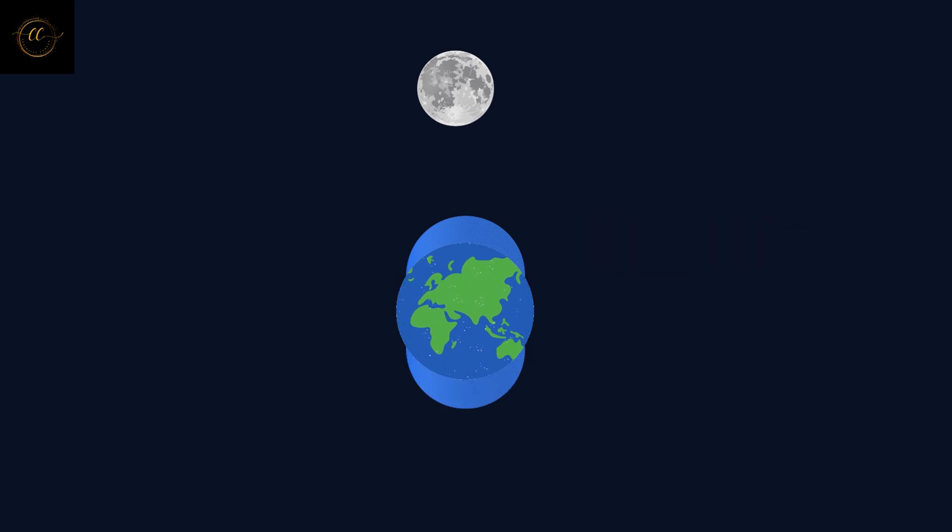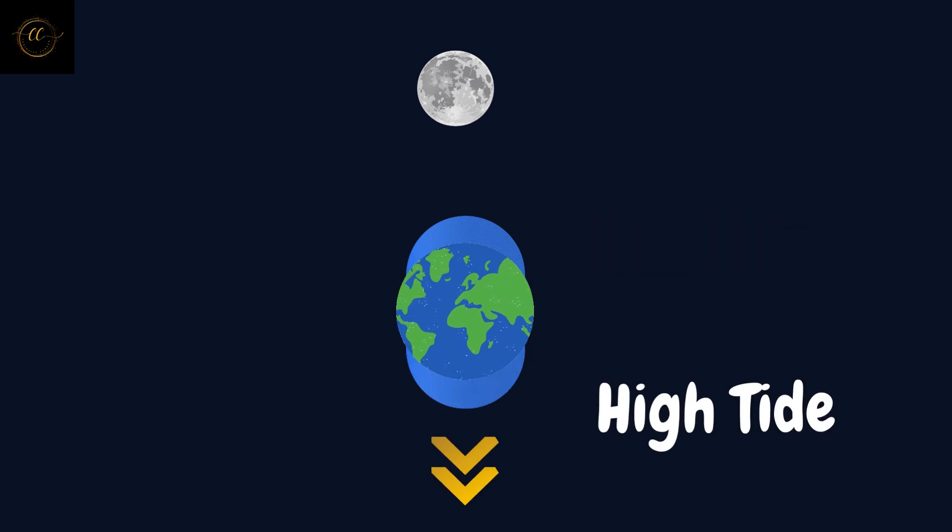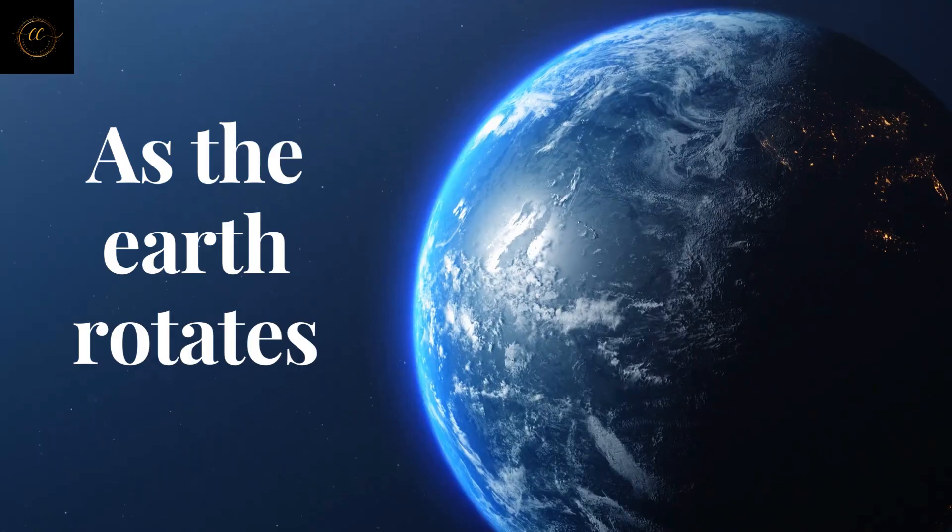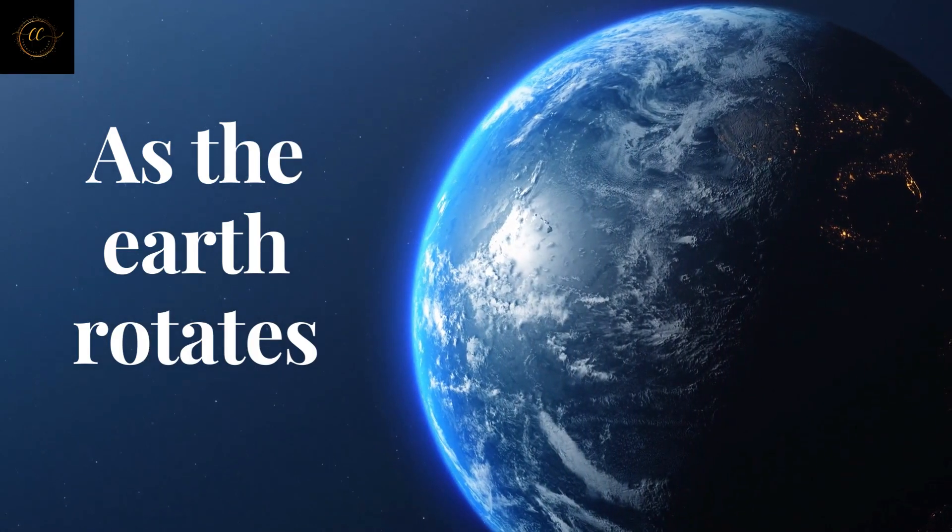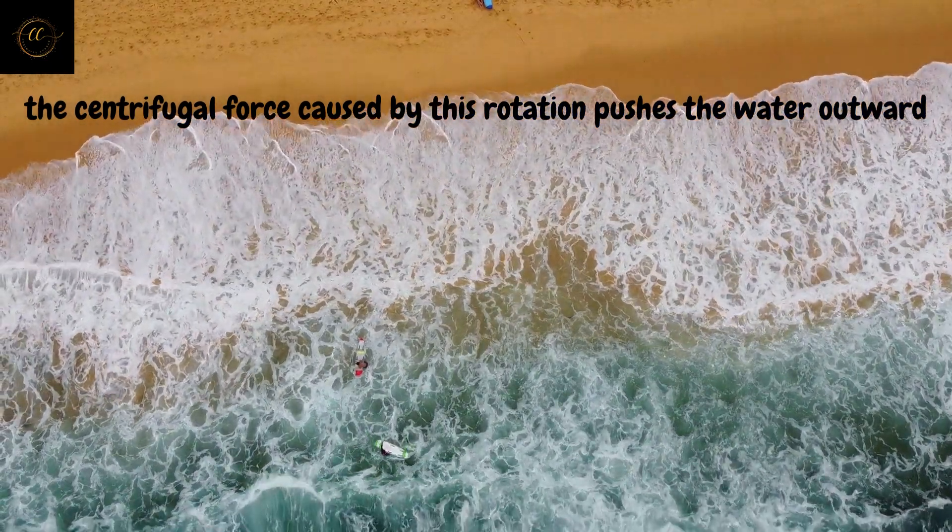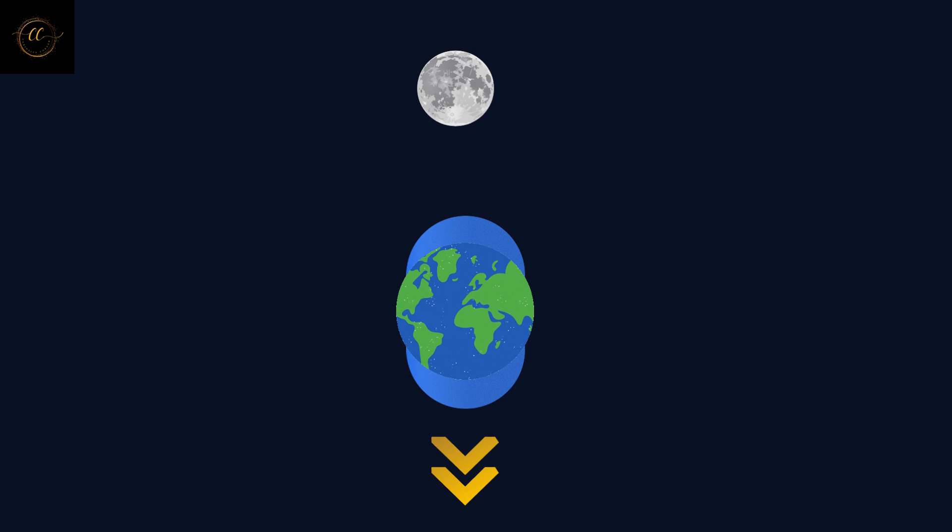Similarly, on the opposite side of the earth, there is also a high tide due to the centrifugal force. Centrifugal force is a perceived force that appears to act outward on an object moving in a circular path. As the earth rotates, the centrifugal force caused by this rotation pushes the water outward, creating another bulge of water on the opposite side.